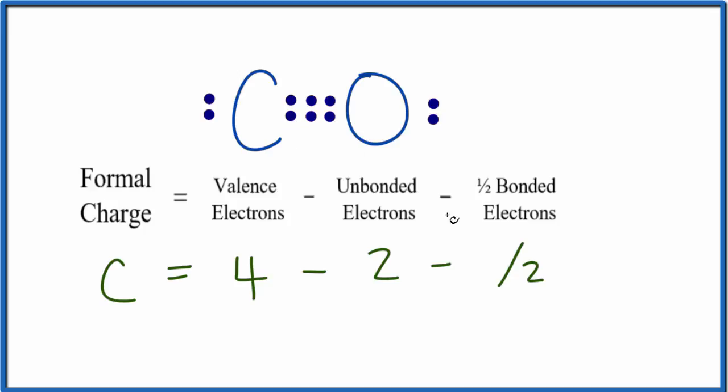We have two, four, six of those. Four minus two is two. Two minus three, that'll give us a negative one formal charge, and we'll put that right here on the carbon.